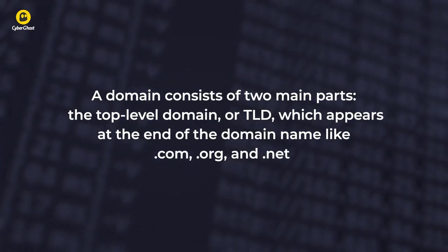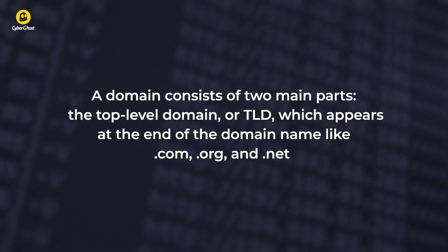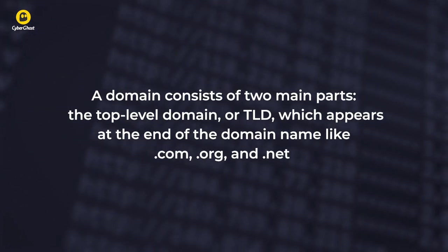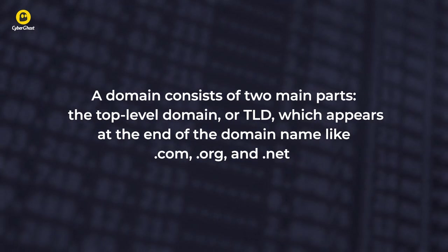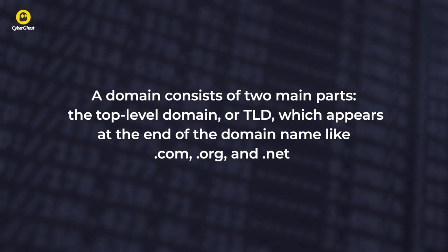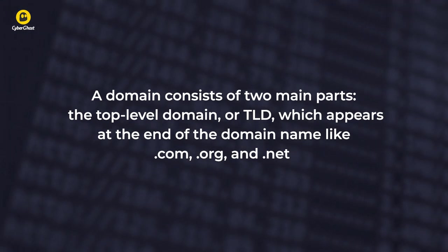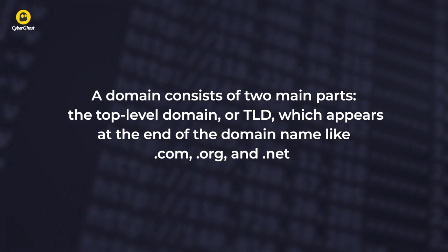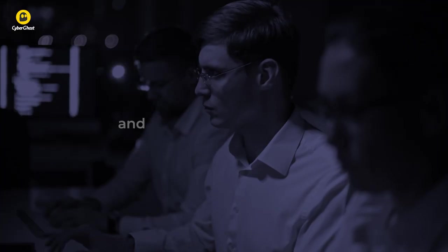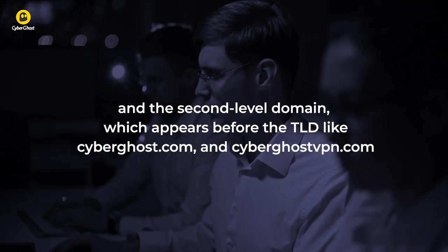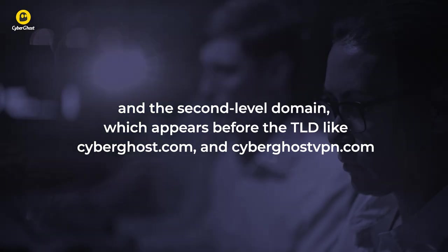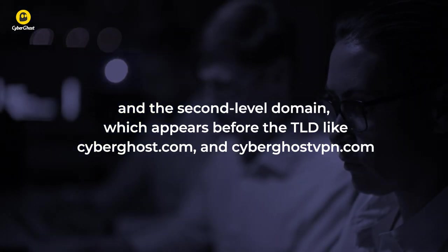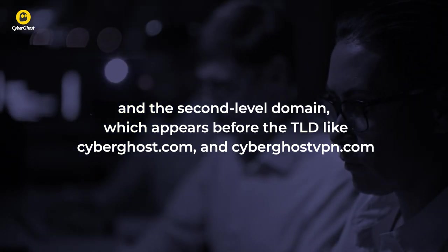A domain consists of two main parts – the top-level domain, or TLD, which appears at the end of the domain name like .com, .org, and .net, and the second-level domain, which appears before the TLD like cyberghost.com and cyberghostvpn.com.